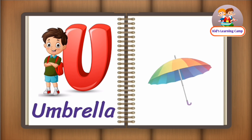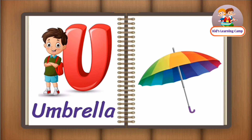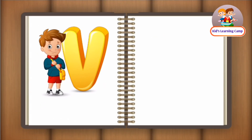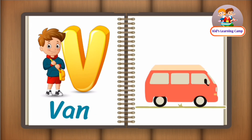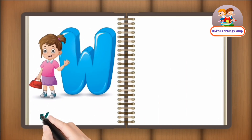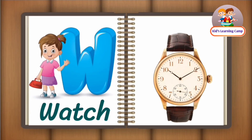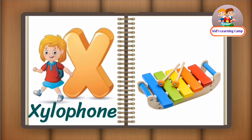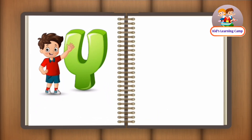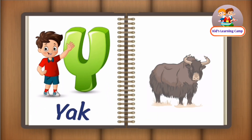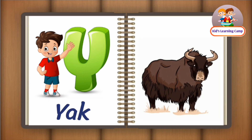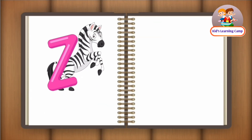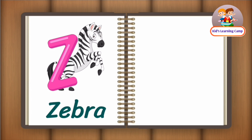U for Umbrella. V for Van. W for Watch. X for Xylophone. Y for Yak. Z for Zebra.